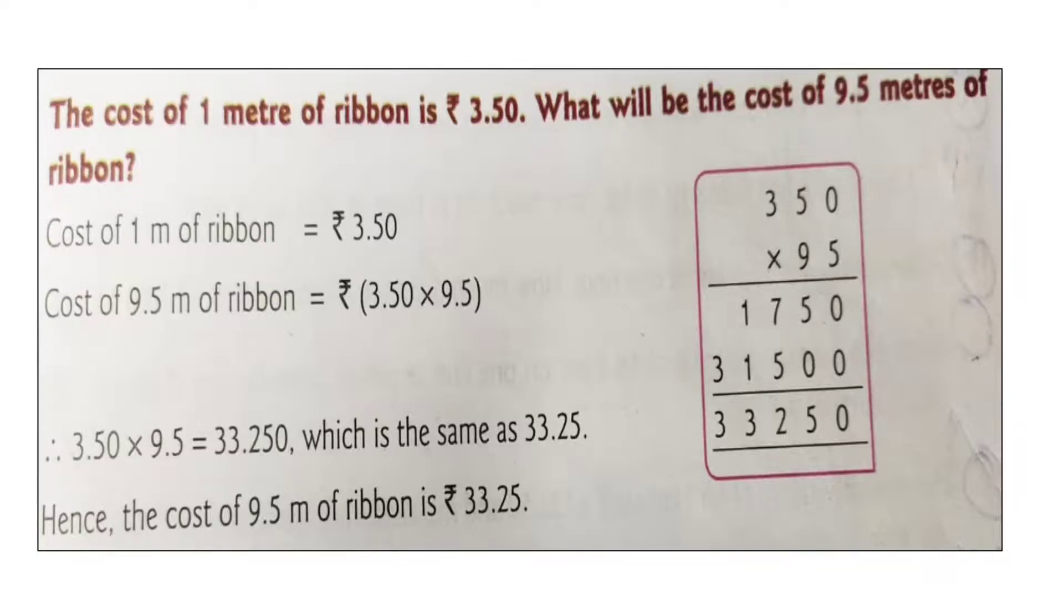When we multiply 350 by 95, we will get 33,250. Therefore, 3.50 multiply 9.5 equals 33.250, which is the same as 33.25. Hence, the cost of 9.5 meters of ribbon is rupees 33.25.